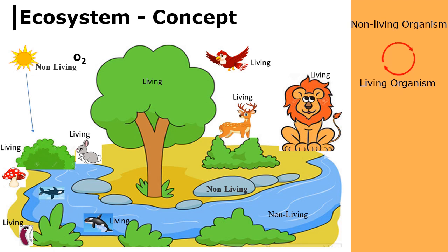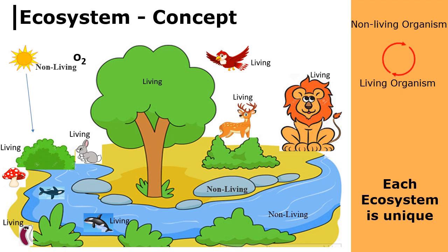We must remember that degradation of any of these non-living factors will pose a threat to the entire ecosystem. We should also remember that each ecosystem is unique in nature. The living organisms found in one ecosystem may not be found in another ecosystem. The plants, animals and microorganisms found in forest ecosystem, mountain ecosystem, desert ecosystem, aquatic ecosystem or polar ecosystems are all different. Therefore, we should not destroy them, because destruction of any ecosystem cannot be compensated.